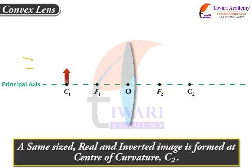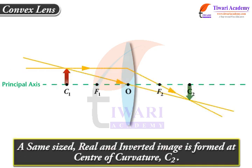A same-sized, real and inverted image is formed at centre of curvature C2 when the object is placed at centre of curvature C1 of a convex lens.